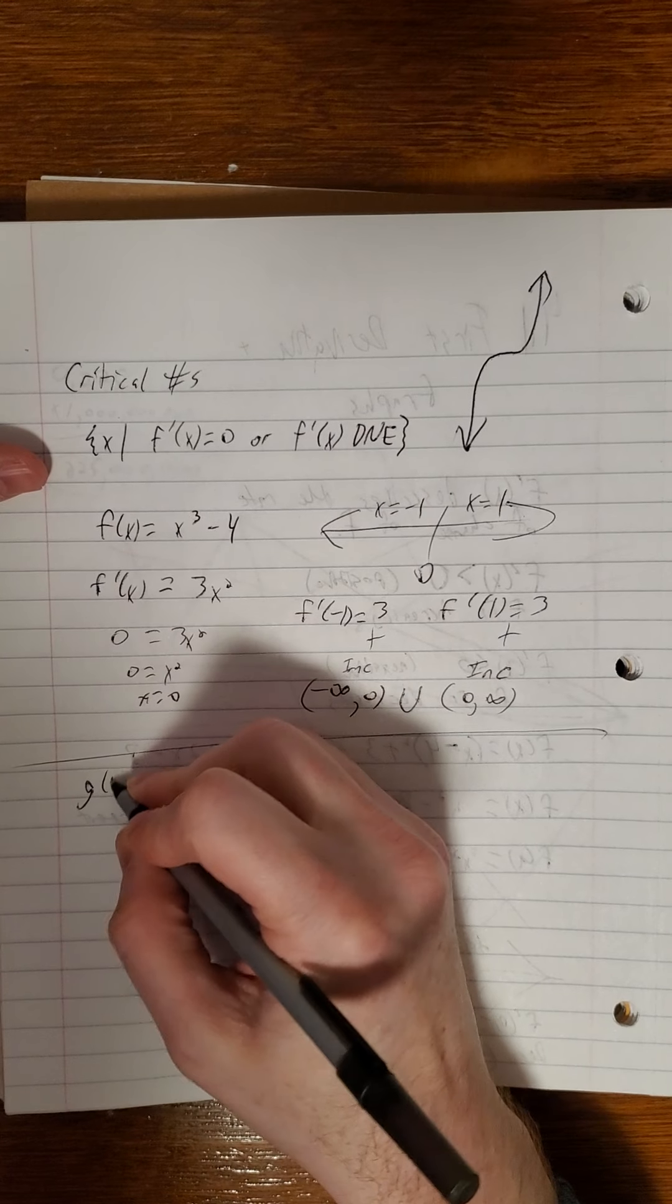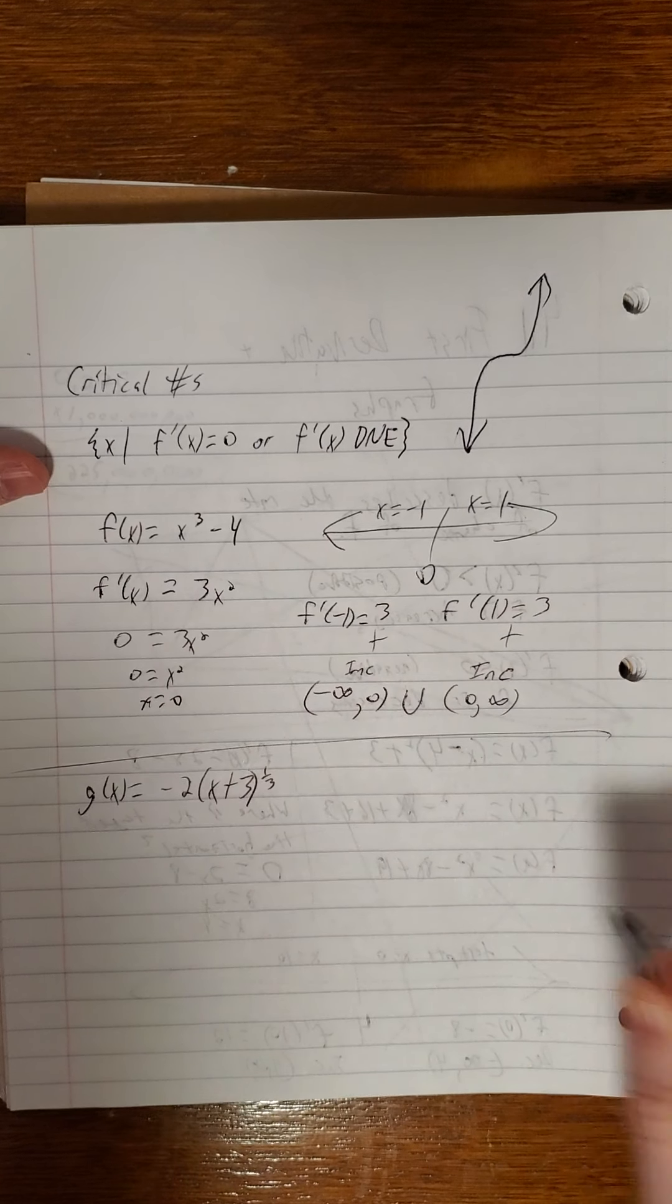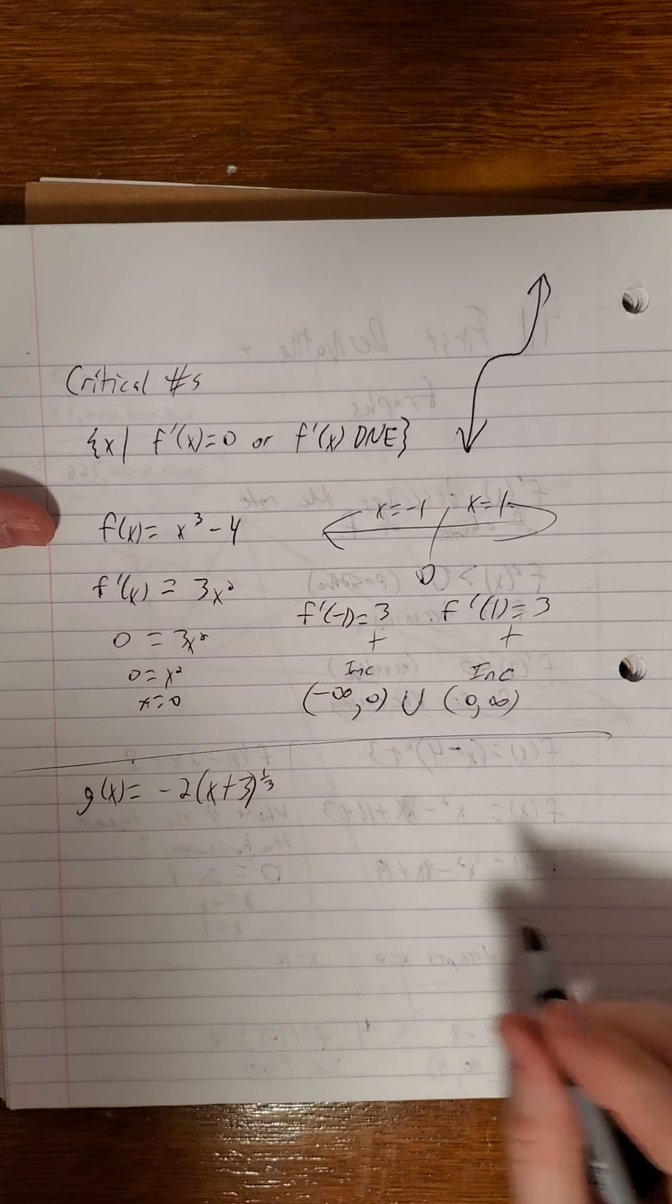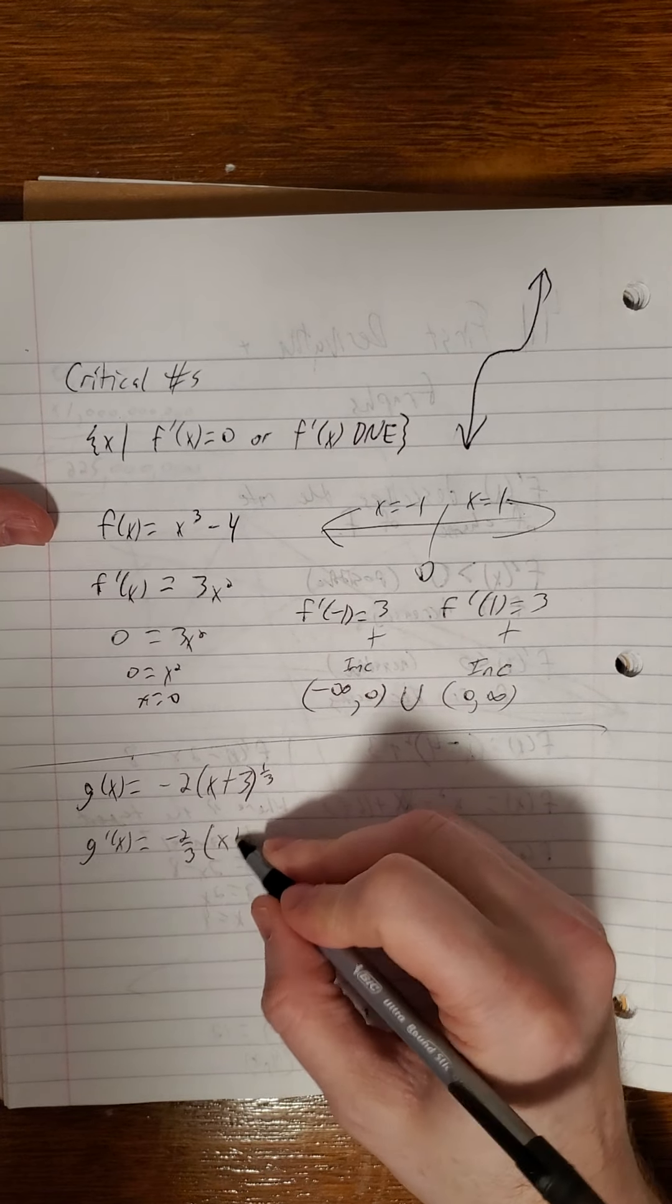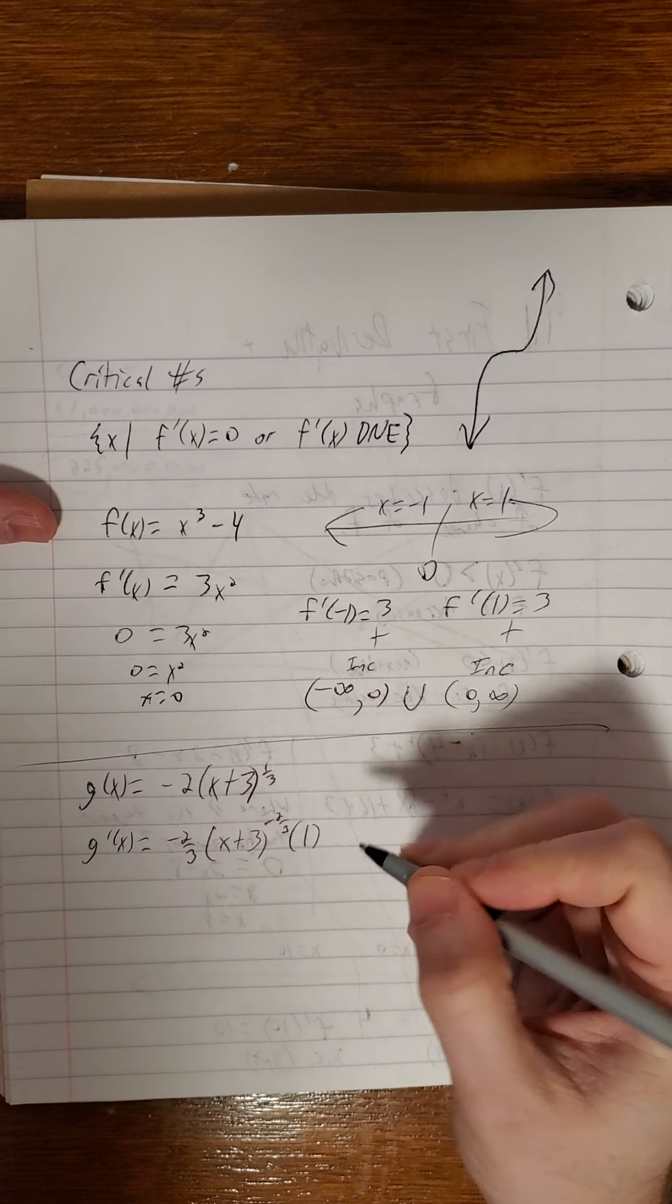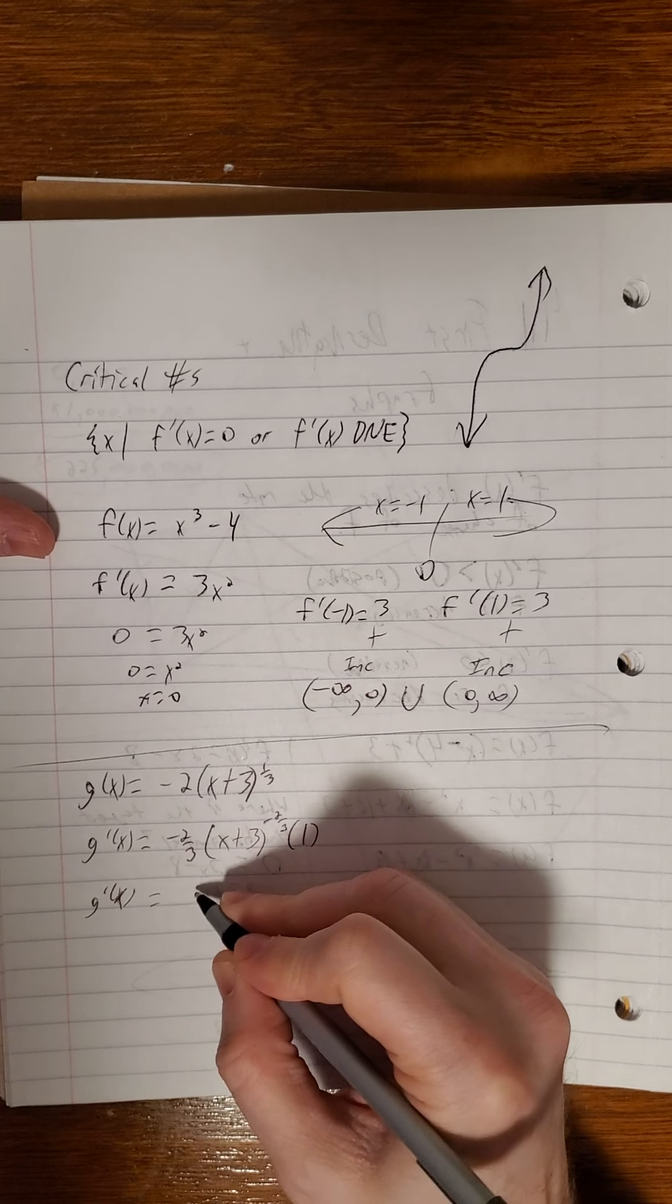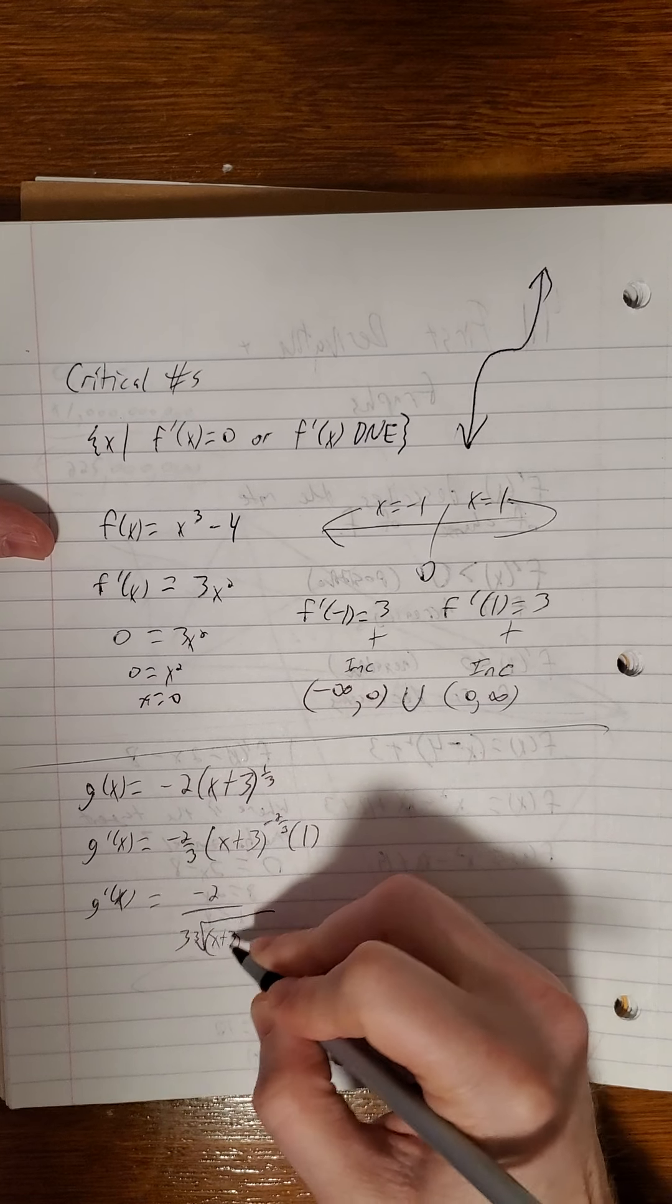All right. So next up, we'll throw a g of x into it. I'll do negative 2 by x plus 3 quantity to the 1 third power. So we'll look at first finding critical values. So g prime of x, negative 2 thirds x plus 3 quantity to the 1 third minus 3 thirds is negative 2 thirds, times the derivative of x plus 3, which is 1. So g prime of x is negative 2 over 3 times the cube root of x plus 3 quantity squared.